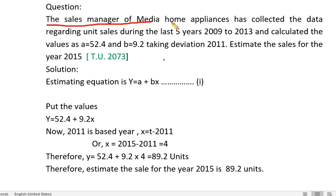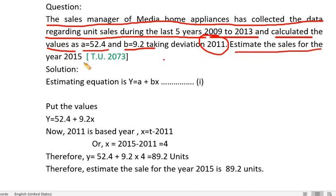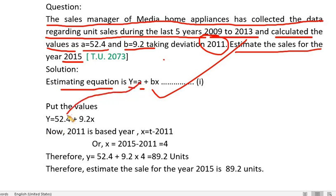The sales manager of Media Home has collected data regarding unit sales during the last 5 years, 2009 to 2013, and calculated values as A equal to 52.4 and B equal to 9.4, taking deviations. We need to estimate the sales for the year 2015. The equation is y equals A plus Bx, where A equals 52.4 and B equals 9.2.